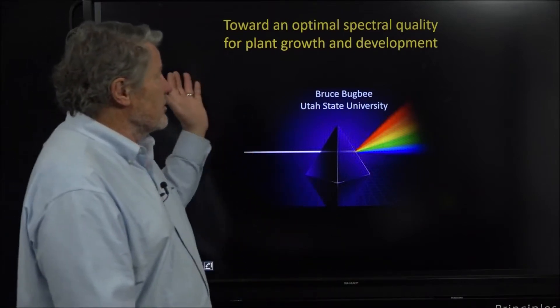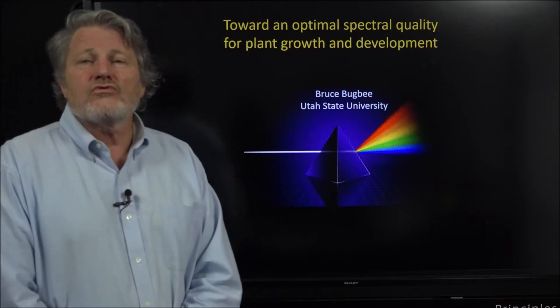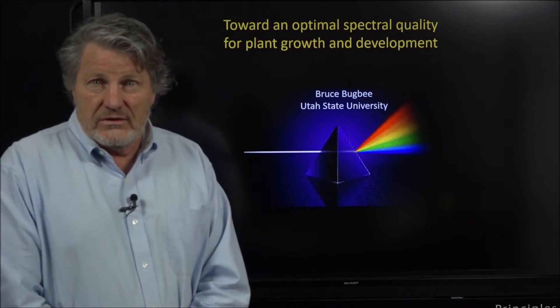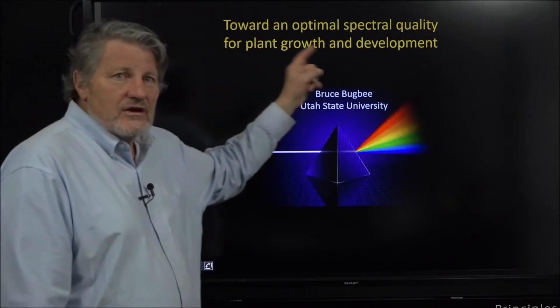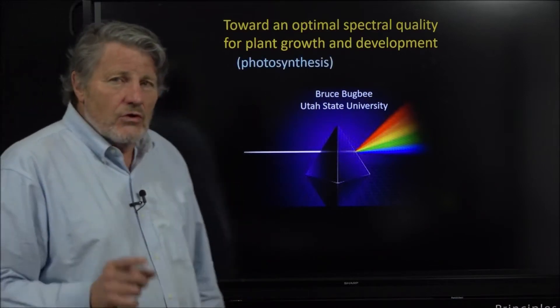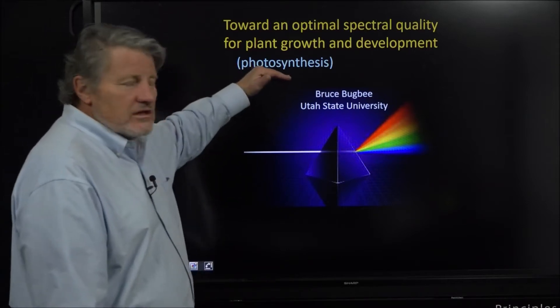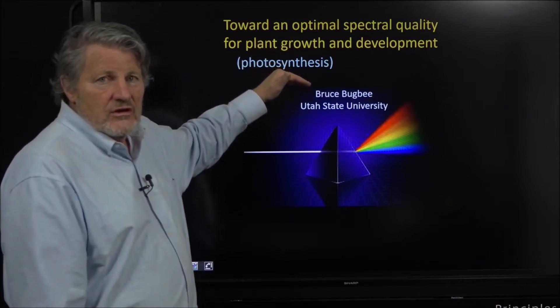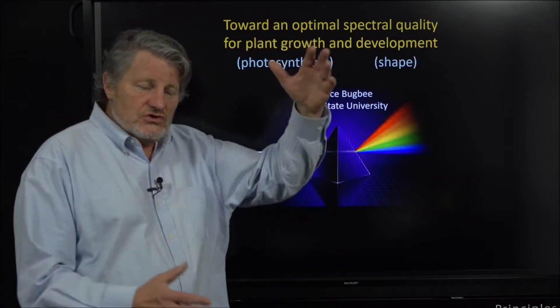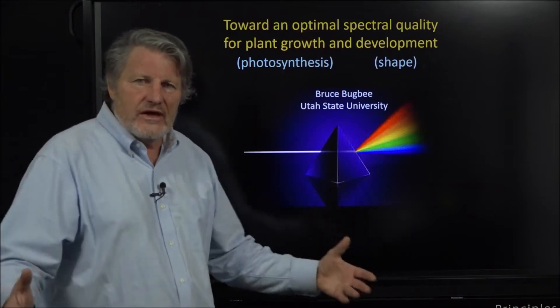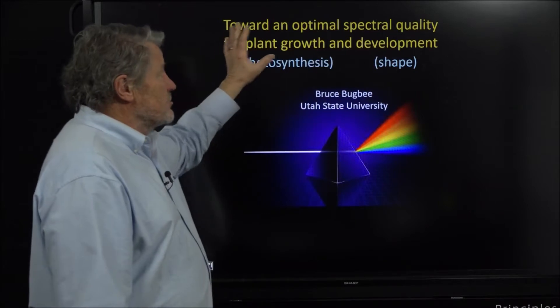I'm calling this towards an optimal spectral quality for plant growth and development. When we say plant growth we mean an increase in dry weight of the plants and that directly comes from photosynthesis. When we say development we mostly mean plant shape - is it a tall skinny plant or a short fat plant? You could have the same size plant with very different shapes.